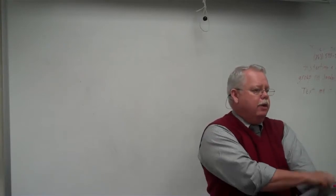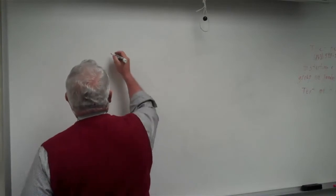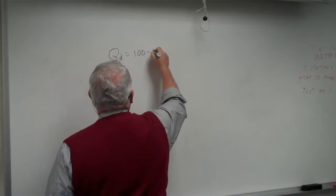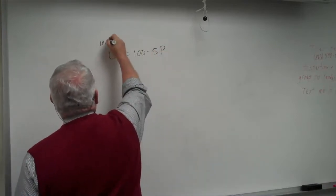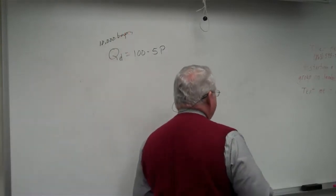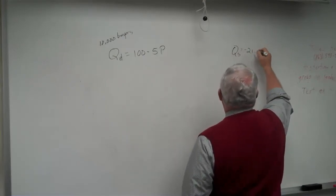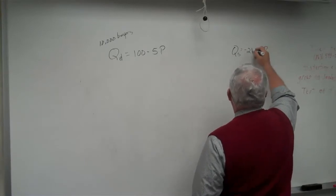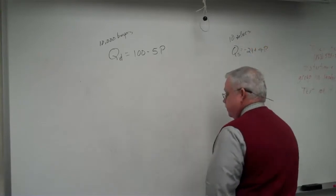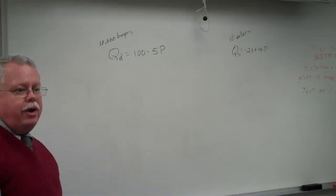Let's do one just for practice. I have to do it first. Here — just for practice. Quantity demanded. There are 10,000 buyers. Sellers and producers are interchangeable, that's correct. So if you look at the price of the quantity supply: minus 21 plus 4P, there are 10 sellers. Solve for the equilibrium price and quantity. Let's do that first. Can you do that off the top of your head, everybody?